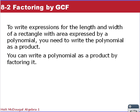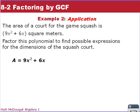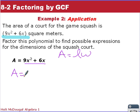Now we're going to talk about writing expressions for the length and width of a rectangle when the area is expressed by a polynomial. We write the polynomial as a product. The area of a squash court is 9x² + 6x square meters — we need to factor this polynomial to find possible expressions for the dimensions. Remember: area equals length times width, so we need to factor the expression. The GCF of 9 and 6 is 3, and each term has an x.